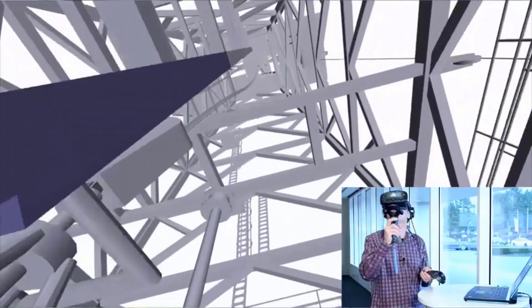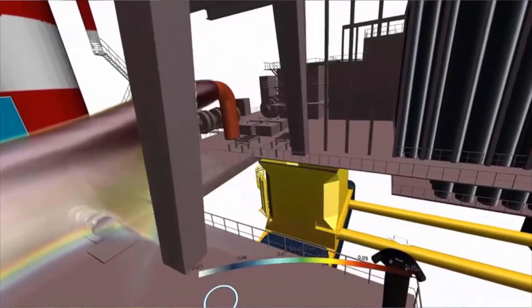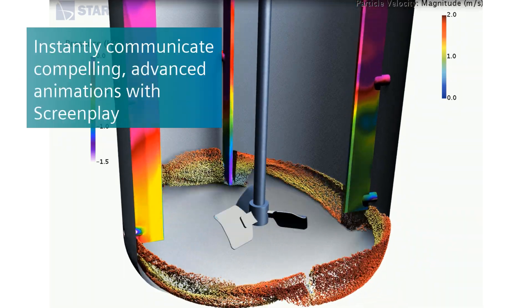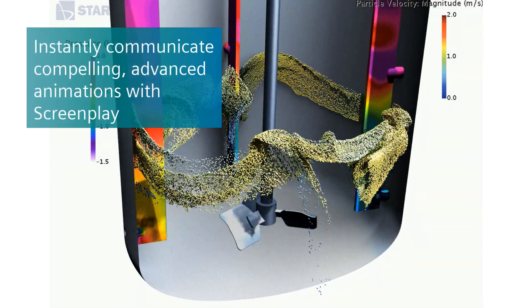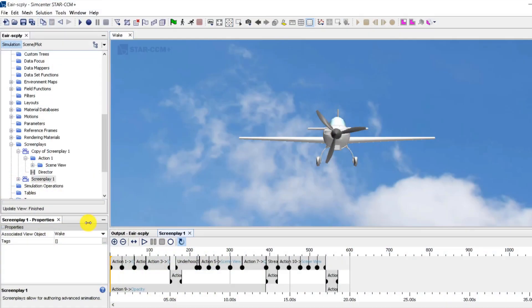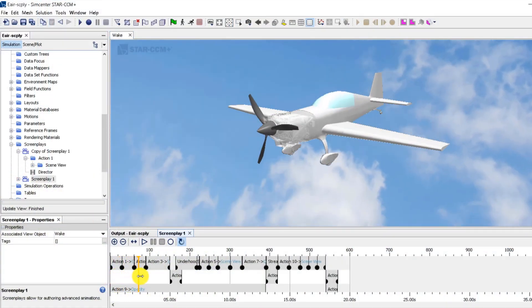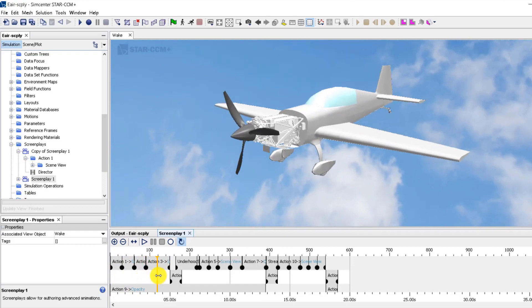In Simcenter Star CCM Plus 2019.2, we introduced Screenplay, enabling you to make informative and persuasive animations easily using an intuitive drag-and-drop interface. Screenplay quickly animates and interpolates simulation views and visualizations. With these animations, you can bring your concepts to life and better convey the context of your simulations, adding impact to the way you communicate results to colleagues, clients, and leadership.